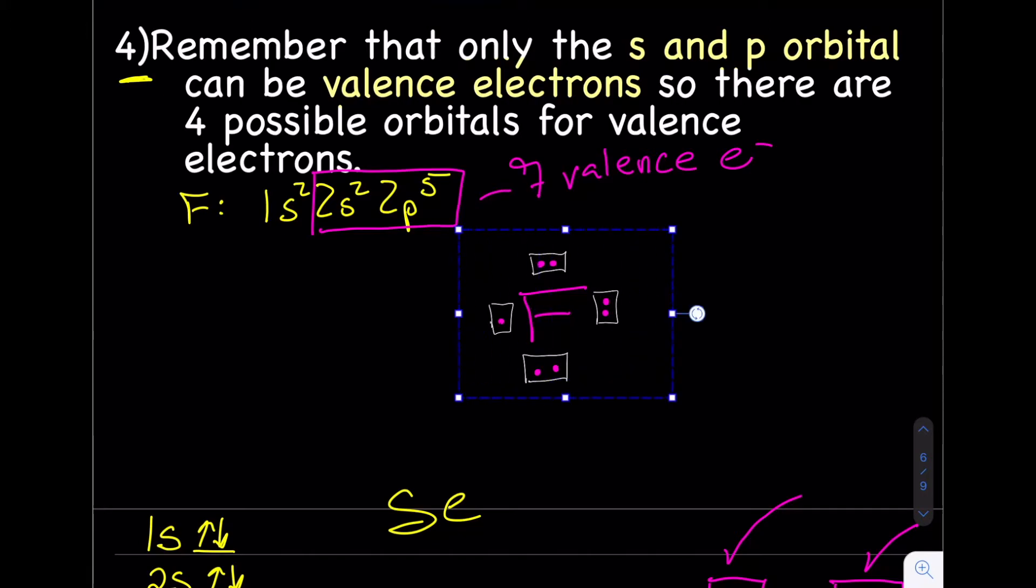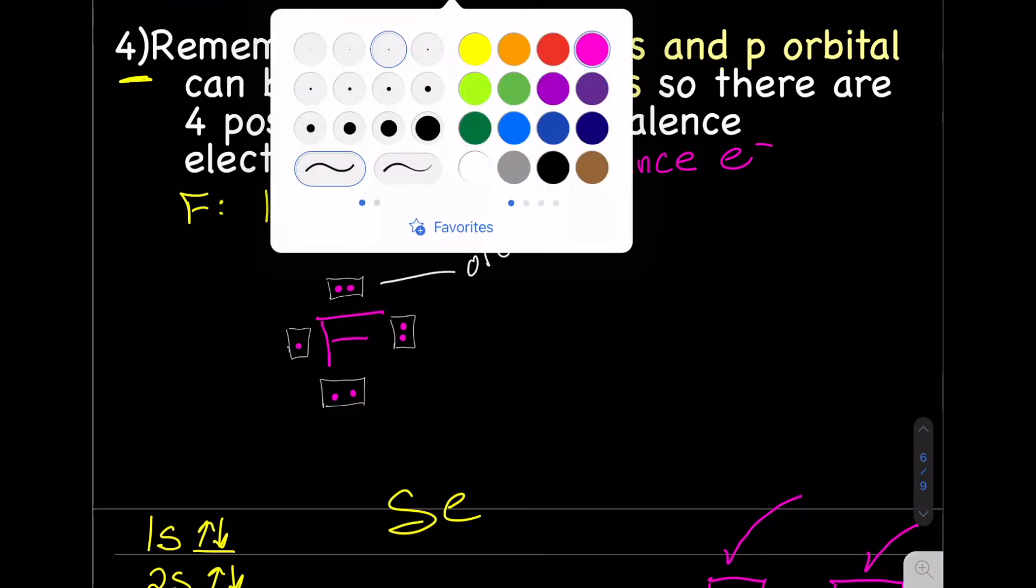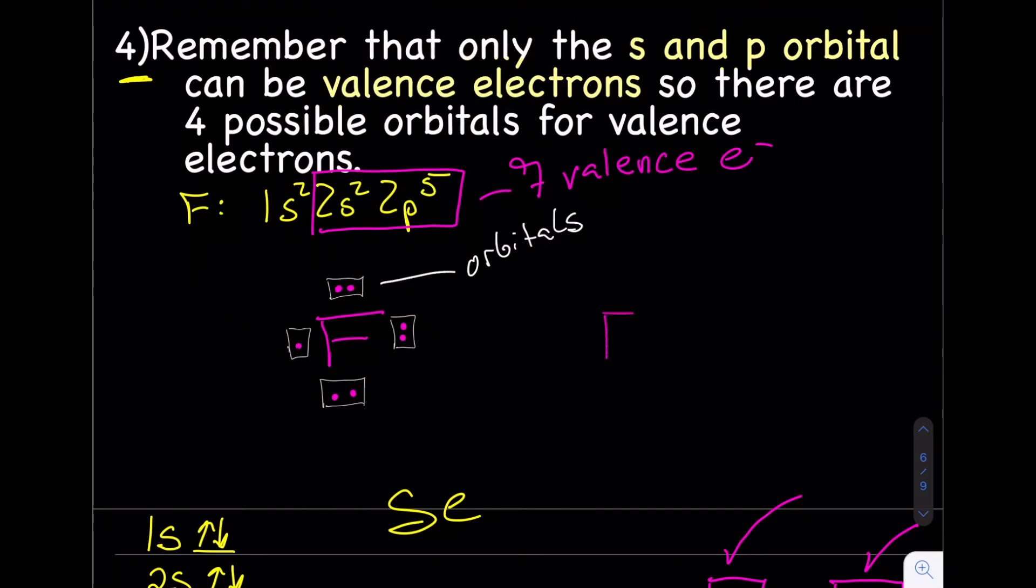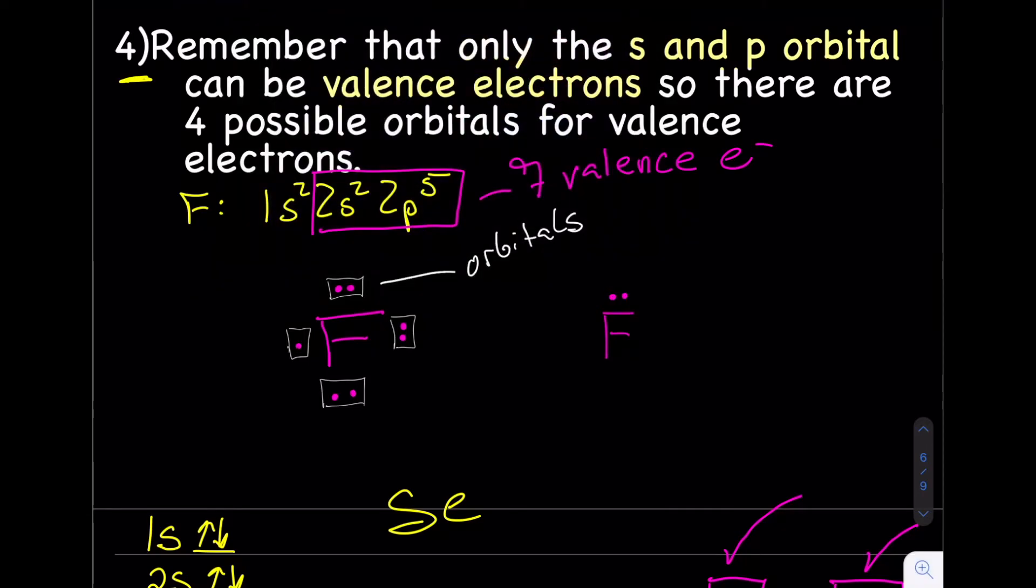From Hund's rule, we put one electron in each orbital first and then go back and fill in. So we would have one, two, three, four, five, six, seven. There is the Lewis dot structure for the fluorine atom. Normally we don't actually put these little orbitals—we make those orbitals invisible. So the way we would really write this is like that. They're paired up and we can sort of imagine those orbitals being there. That's basically how you write the Lewis dot structure for a single atom.